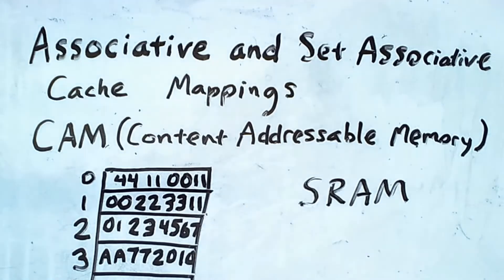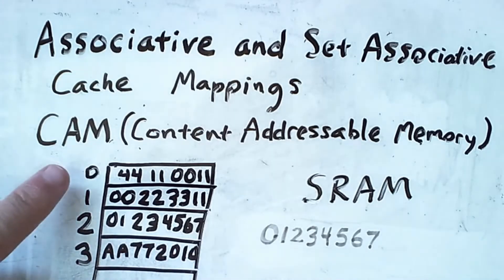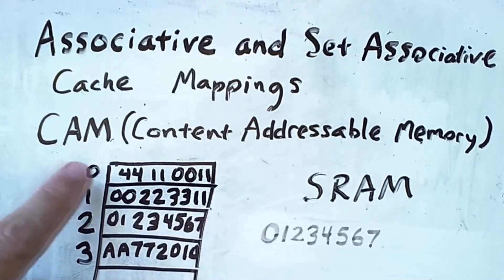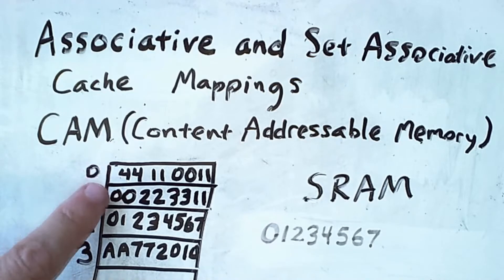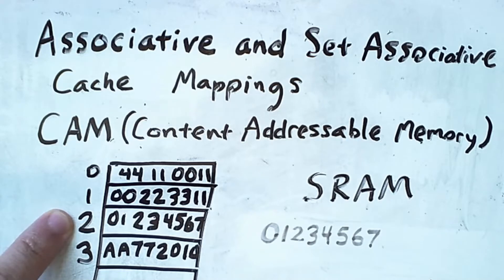So in this example here, if I were to feed in the value 0, 1, 2, 3, 4, 5, 6, 7, then the CAM would simultaneously compare this value against the contents of all of these addresses, and then it would output a value of 2, because 2 is the address, or maybe line number, where those contents occur in this memory.